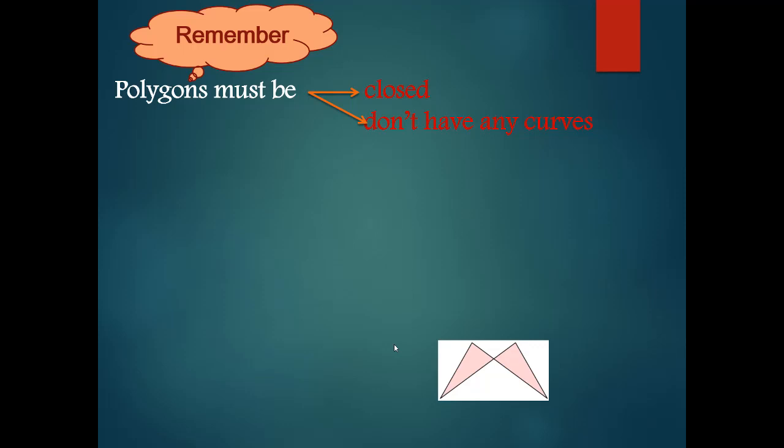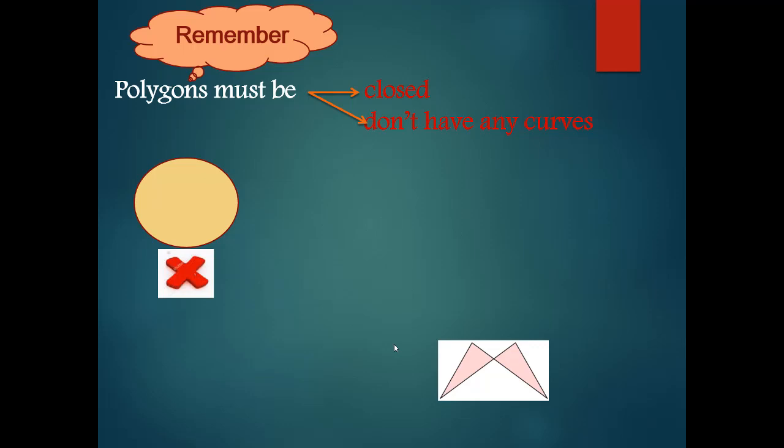What about this? A circle — teacher, it's closed. But it has a curve, teacher. Is it a polygon? No, not a polygon. Why? Because it has a curve. Okay. Another exercise — is this a polygon, my students?